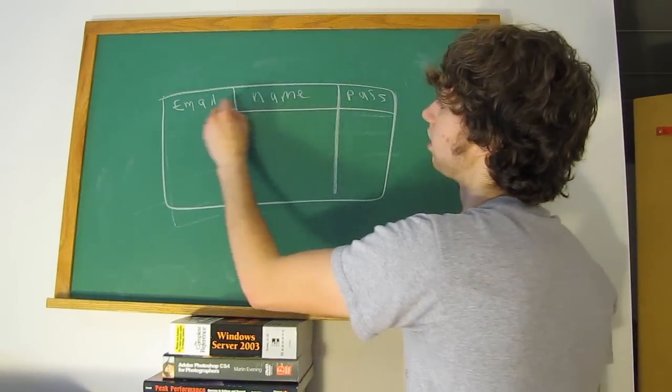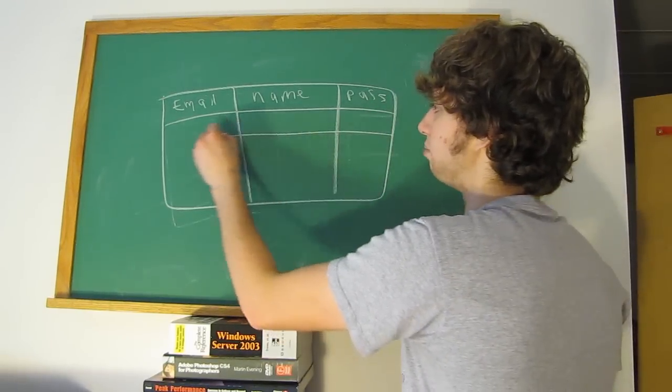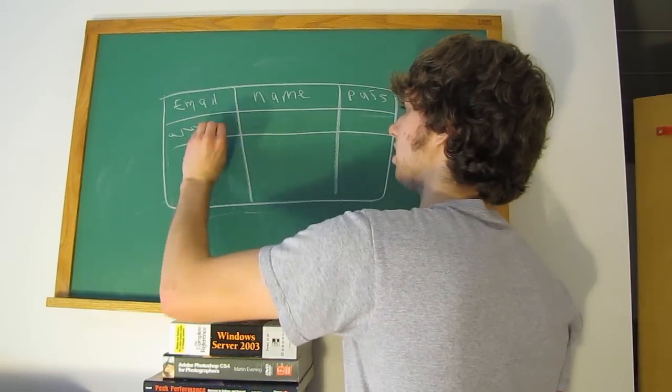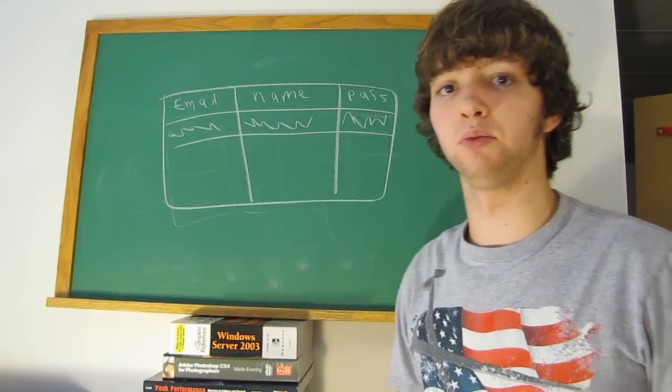An actual database may be something like this. Email, name, password. And then that PHP script sends this information, and it puts it in here. It adds a new row. So it adds the email, it adds the name, and it adds the password.